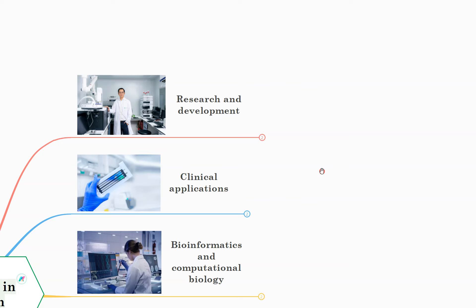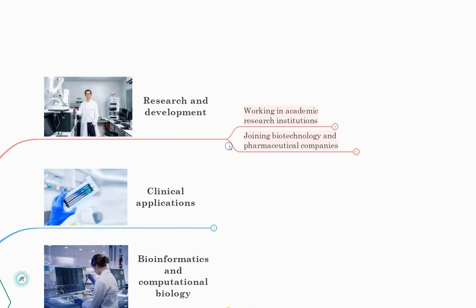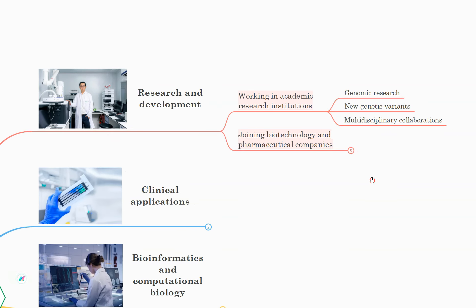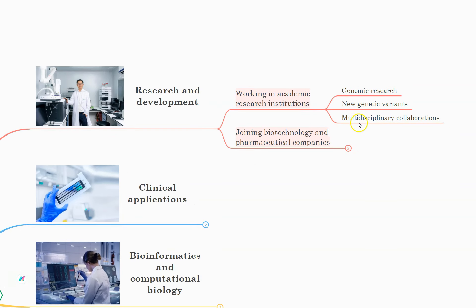The first field to discuss is research and development. Point number one, working in academic research institutes. The responsibilities include performing genomic research using NGS technologies, contributing to the discovery of new genetic variants and their association with diseases, collaborating with multidisciplinary teams to analyze and interpret sequencing data.